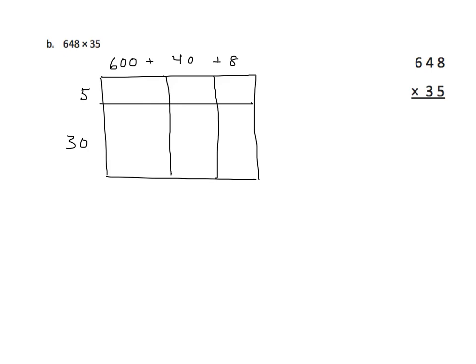We're going to have 3 tens or 30. So we'll multiply. So I have 5 times 8, and that is 40. I have 5 times 40, that's 200. And I have 5 times 600, which is 3,000. Let's go on to the next.